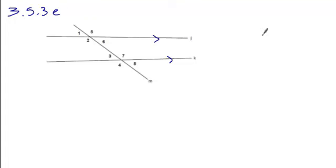In problem E, you're told that lines j and k are parallel. You're given an expression for angle 3, which is 3x minus 14, and the expression for angle 1 is x plus 12.